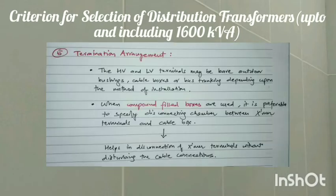Fifth, termination arrangement. The HV and LV terminals may be bare outdoor bushings, cable boxes, or bus trunking depending upon the method of installation. When compound-filled boxes are used, it is preferable to specify a disconnecting chamber. One disconnecting chamber is used between transformer terminals and the cable box. This helps in disconnecting the transformer terminals without disturbing the cable connections.